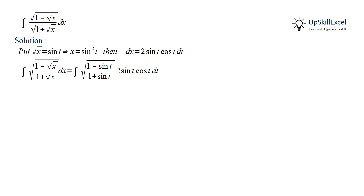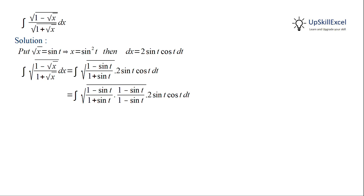Now, in the first term within the square root, we will multiply both numerator and denominator by (1 − sin t). In the numerator, both terms are the same, so it becomes a square which cancels with the square root. In the denominator, we have the conjugate term, giving us √(1 − sin²t).